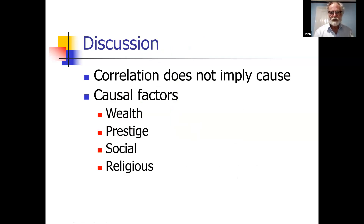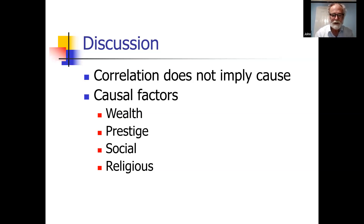Having established there is a correlation between nave area and Domesday population, what is the cause? Correlation does not necessarily imply causation — if you think about the relationship between ice cream sales and hot weather, it doesn't mean ice creams create hot weather. So one has to think about various causal factors that might be affecting this relationship, rather than the religious reason of housing the entire parish population. Possible factors are wealth, prestige, social factors, and the religious explanation.